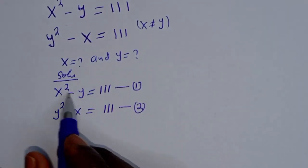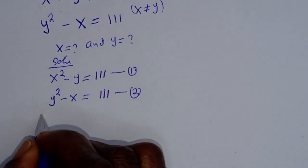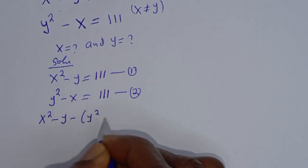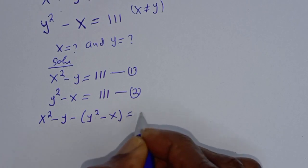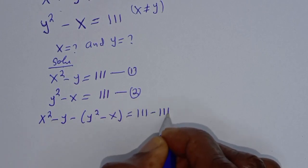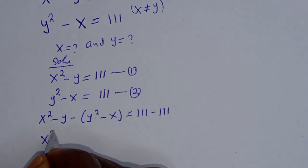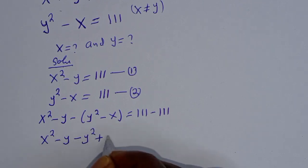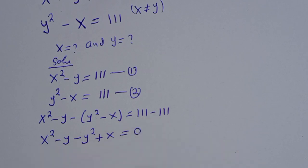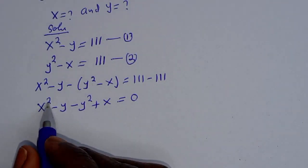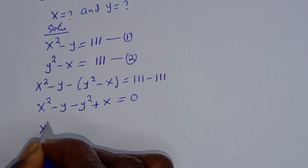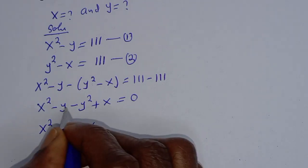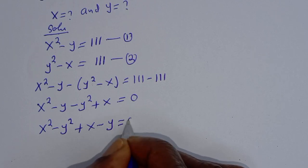Then we can subtract equation 1 from equation 2. That is, x squared minus y minus (y squared minus x) is equal to 111 minus 111. So x squared minus y minus y squared plus x is equal to 0. We have x squared and y squared, giving us x squared minus y squared plus x minus y equals 0.